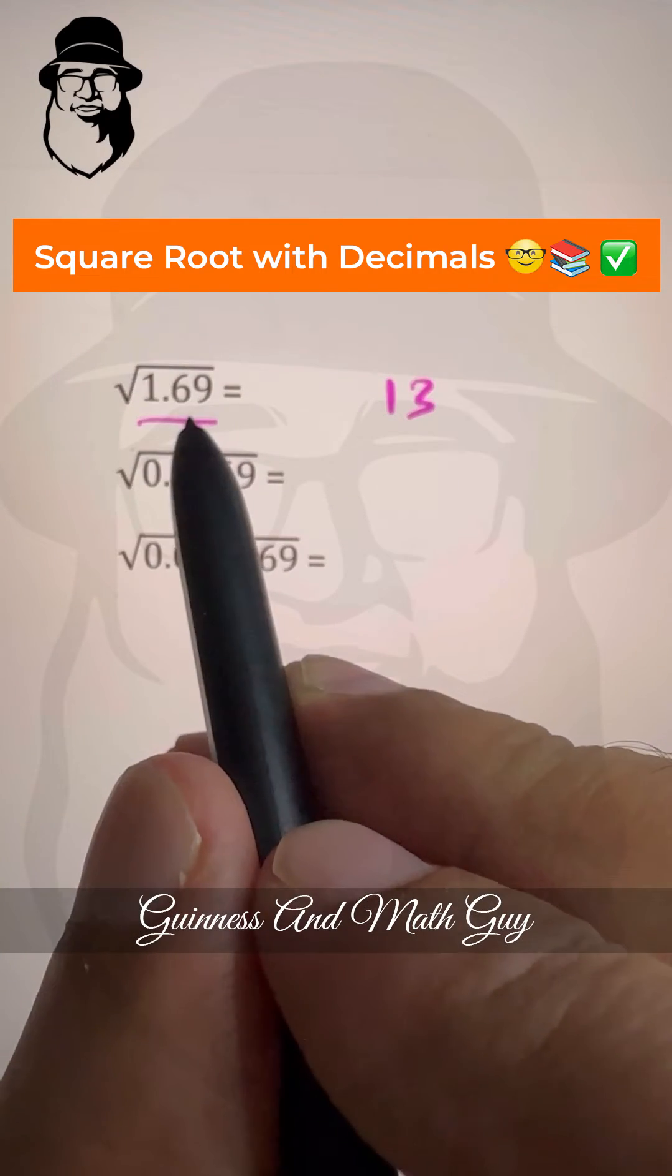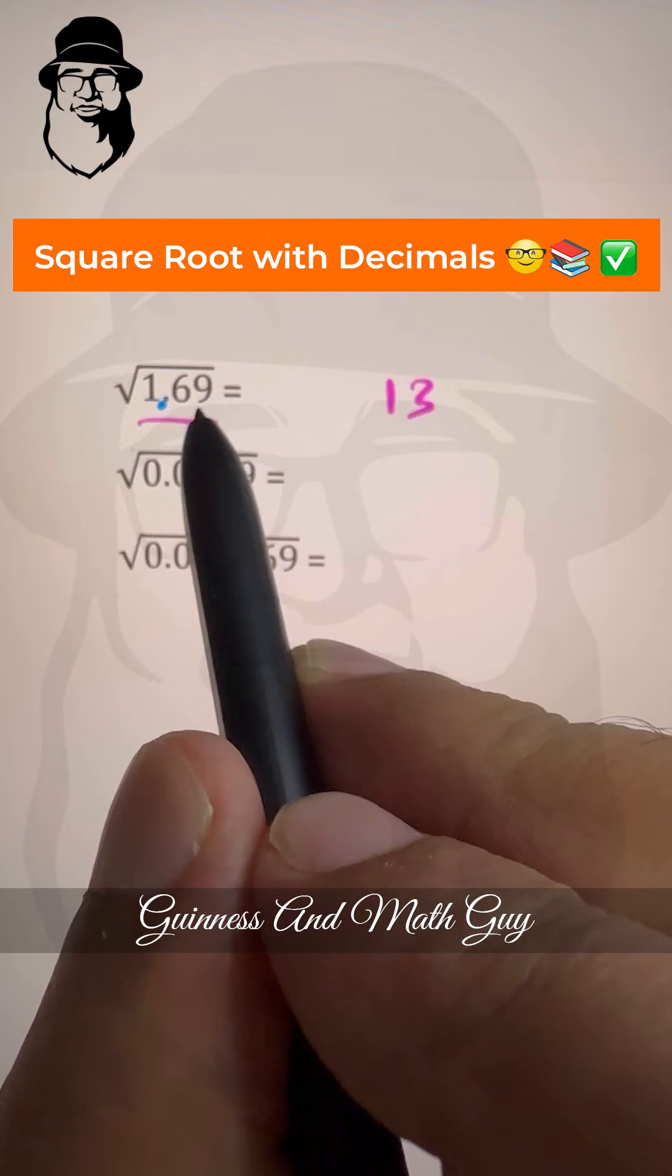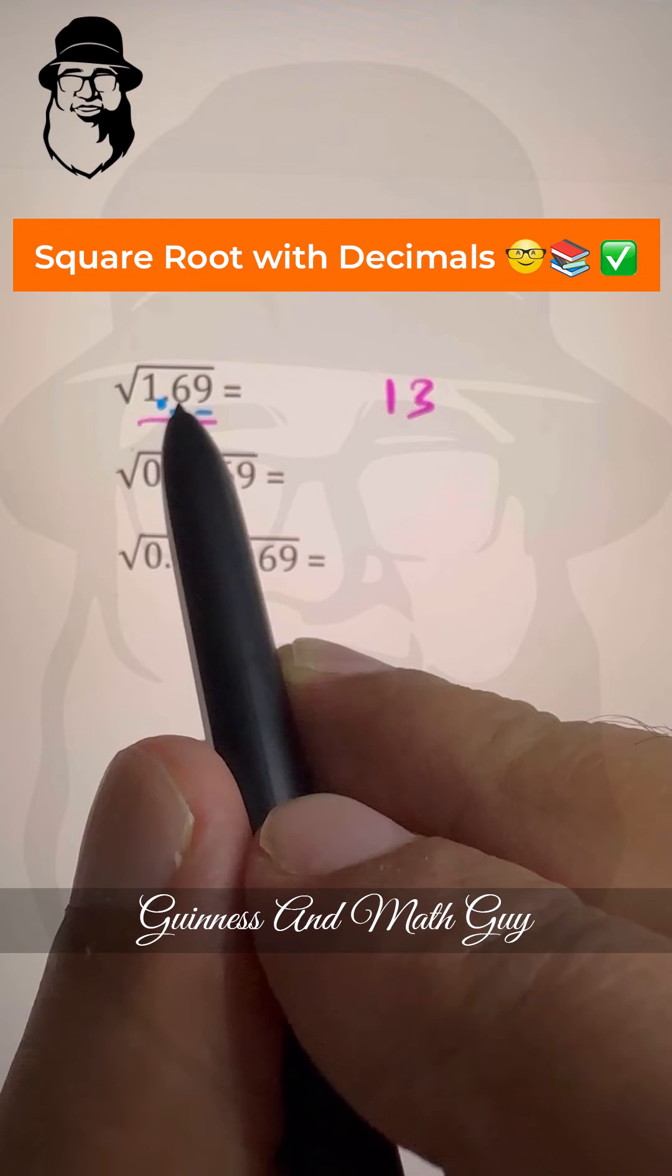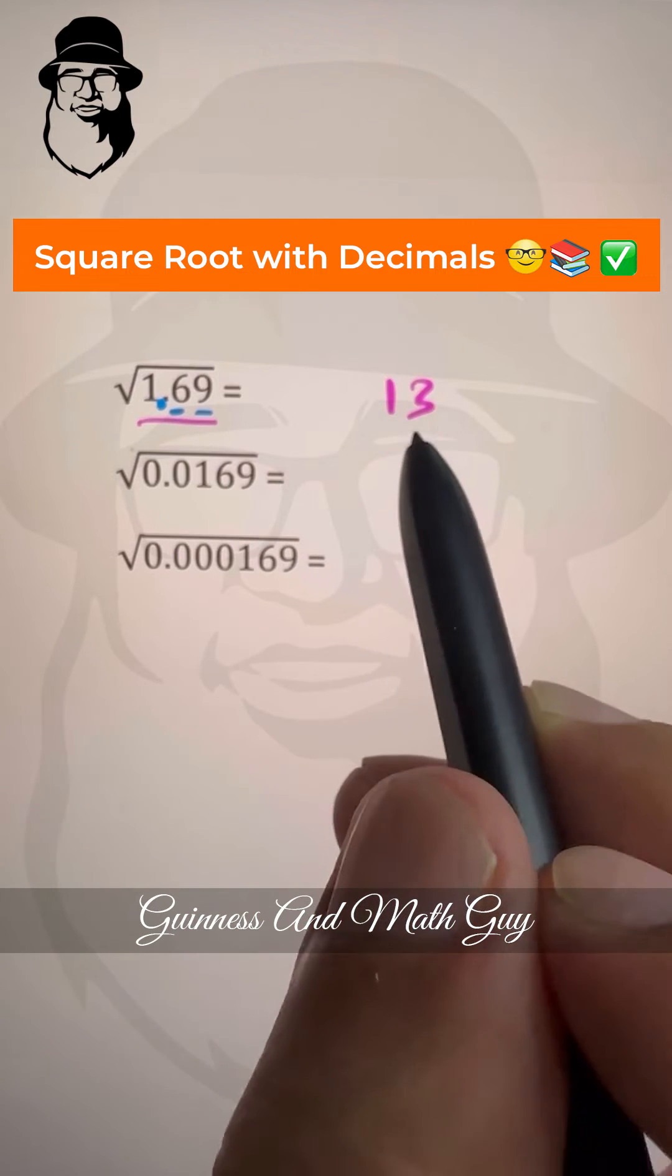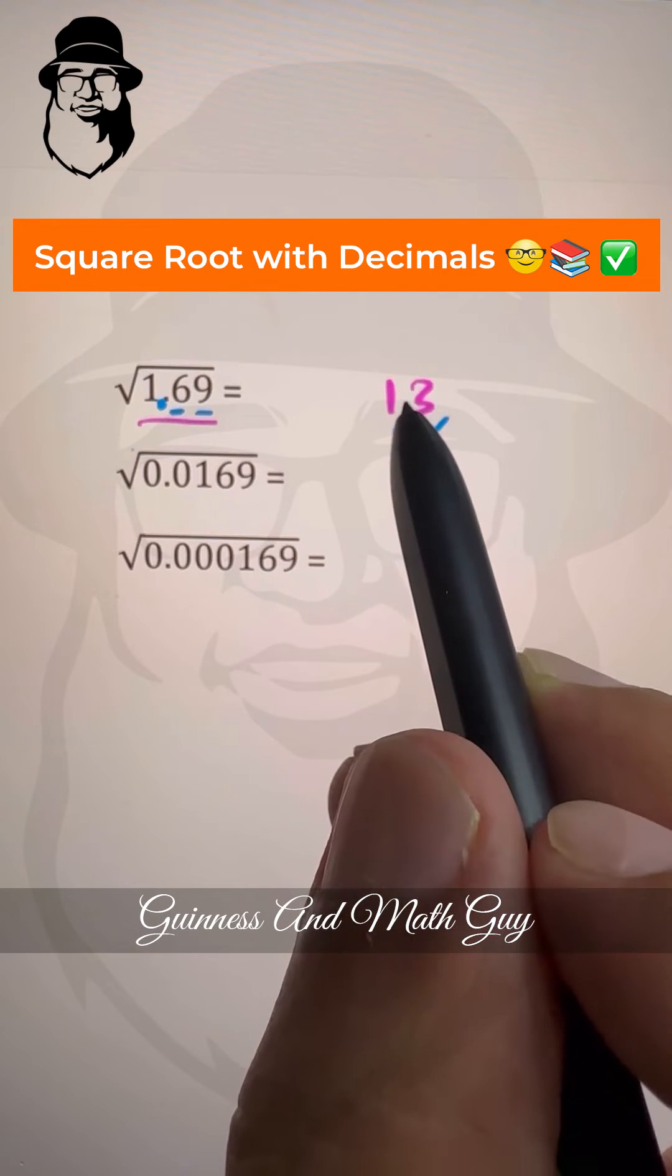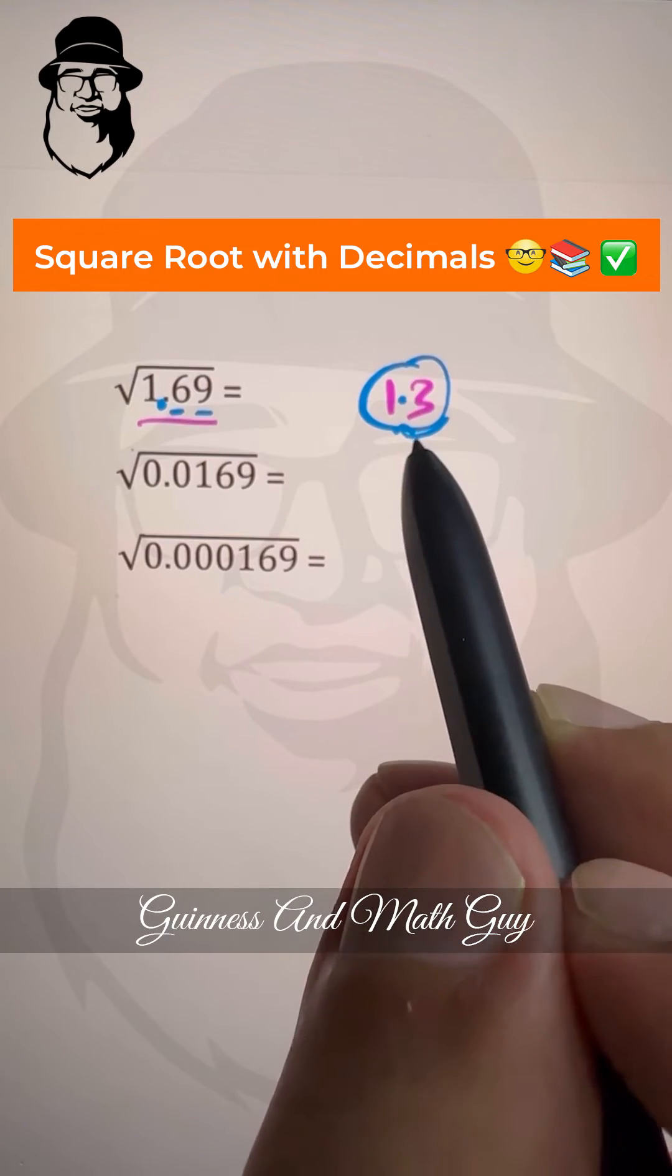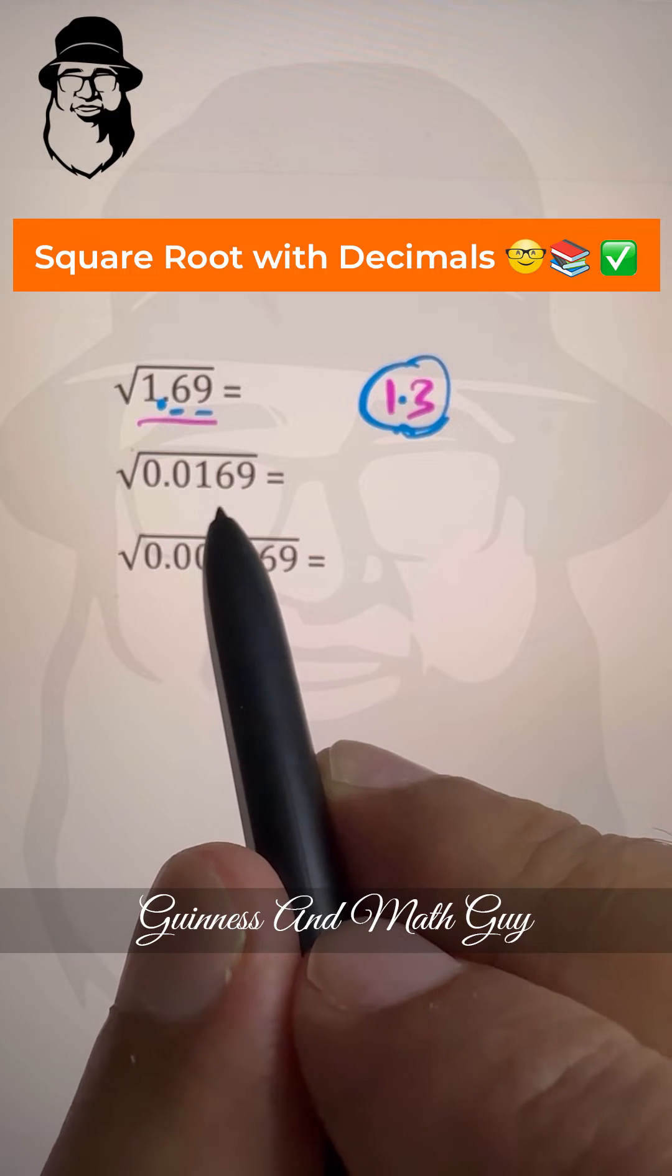After that, the second step is look at the decimal point and count from the right: one digit and two digits. So after two digits we have decimal point, so half of two is one. So here after one digit there will be the decimal point, and 1.3 is our answer for this.